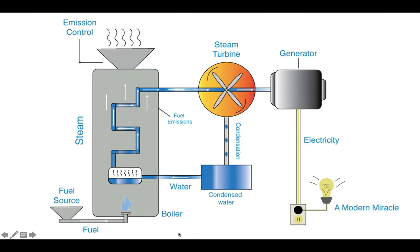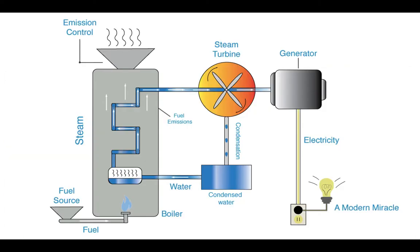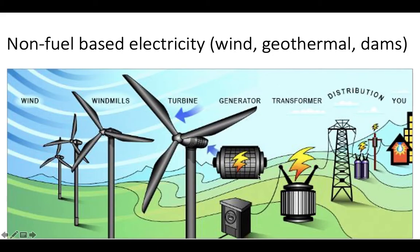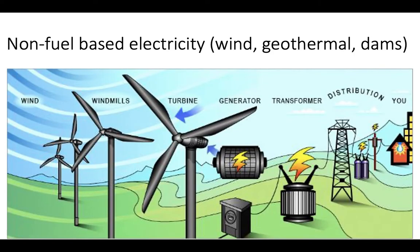Here's another diagram showing the same process: a fuel source — coal, oil, or gas — burns and heats water, which turns into gas and rises, passes through a turbine, and activates a generator to produce electricity. Non-fuel-based electricity sources like wind turbines, geothermal energy, and dams use the same idea of a turbine turning a generator — except instead of burning fuel, you have wind, flowing water, or steam from the earth turning the turbine. This concept of a turbine activating a generator is consistent across virtually all power plants.